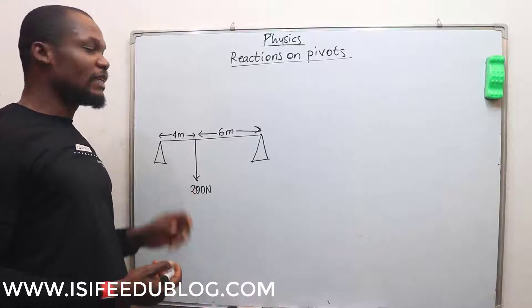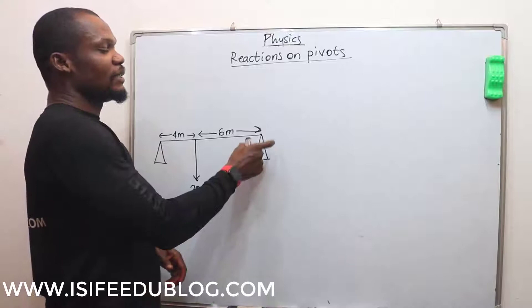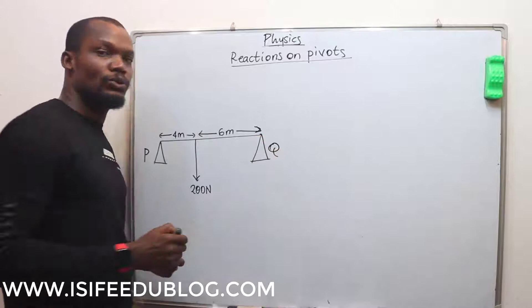The rod is on two pivots, which means this 200 newton force is now resting on these two pivots. So I can call here pivot P and call here pivot Q.